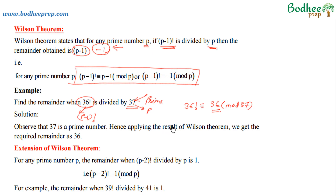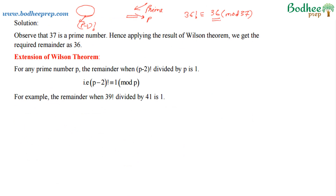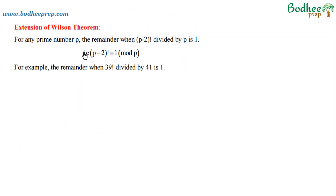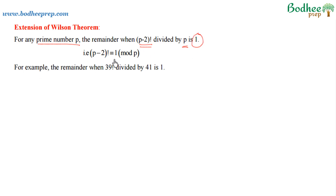Let us understand the extension of Wilson's theorem. This extension is just a modification of what Wilson's theorem says. For any prime number p, if (p-2)! is divided by p, then the remainder is 1. That is, we can write it as (p-2)! ≡ 1 (mod p).